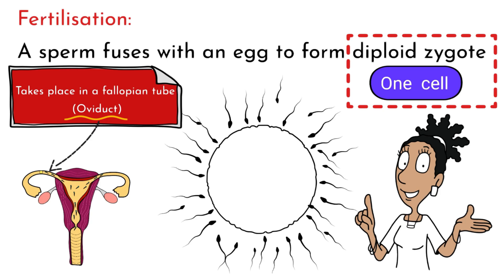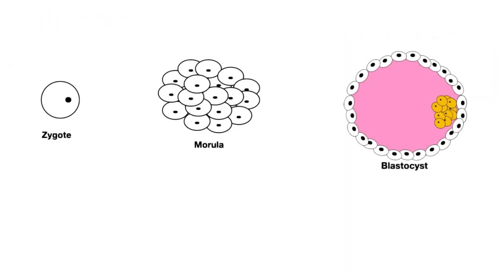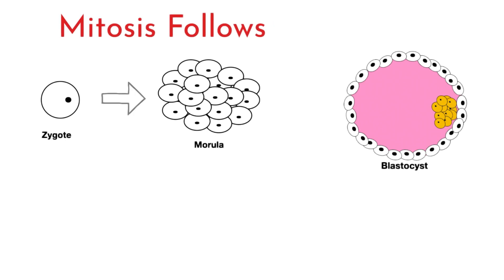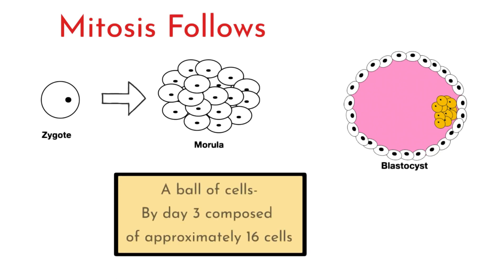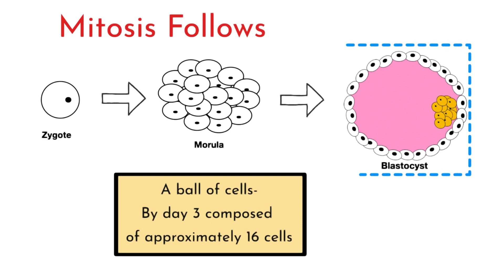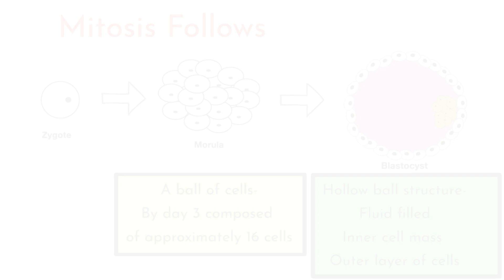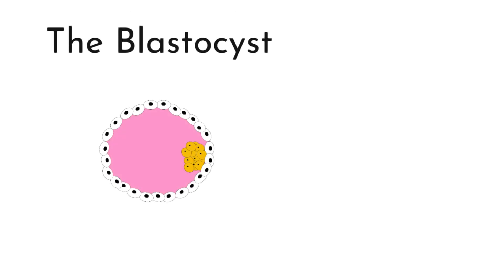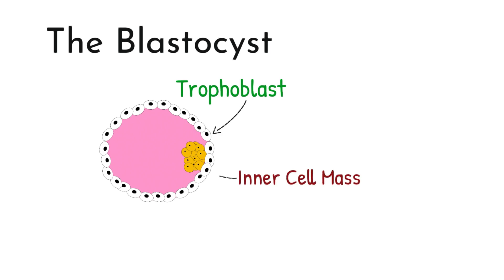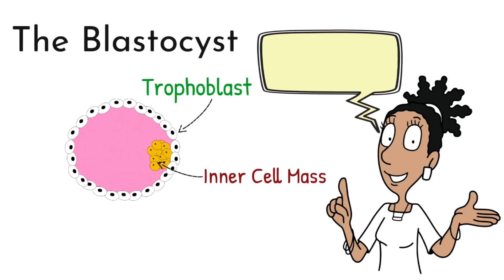What follows is lots of mitosis. The zygote will eventually give rise to a solid ball of cells known as the morula, and around day three it's roughly about 16 cells. The morula will go on to form the blastocyst — a hollow, fluid-filled ball with an inner cell mass and an outer layer of cells known as the trophoblast. These are individual trophoblast cells.